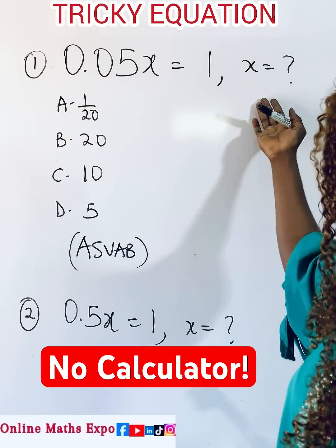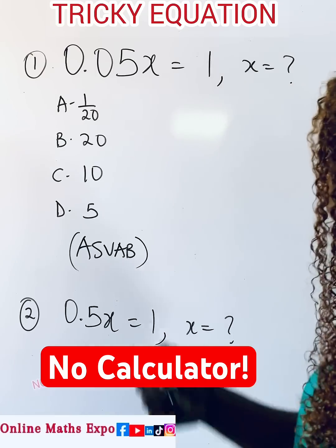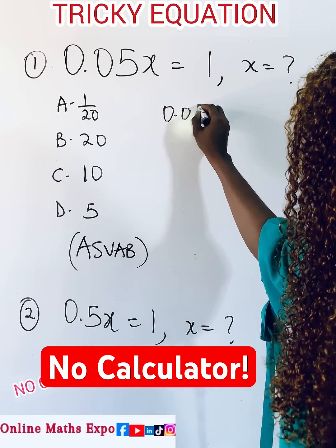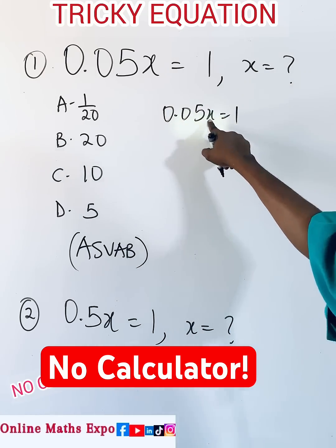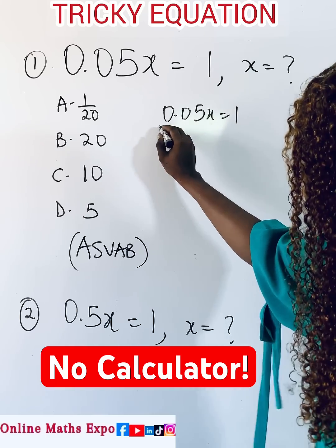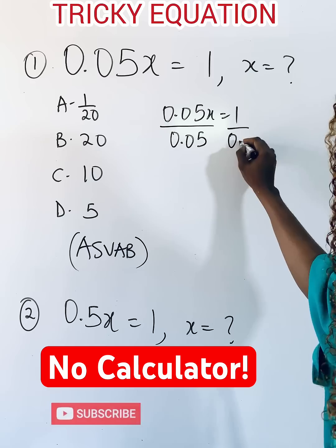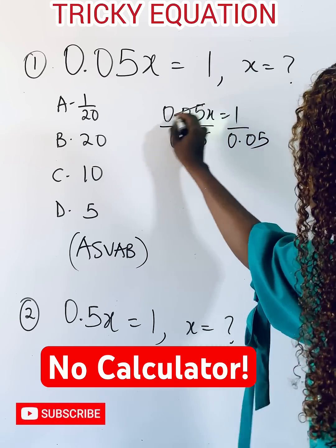No calculator, can you solve this? So easy. Now this is what you have, and to get x you remove this and divide both sides. When you do that, this takes off.